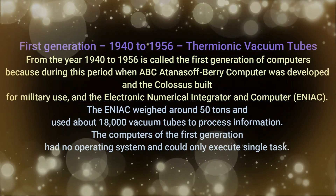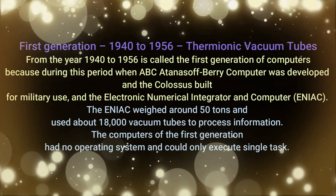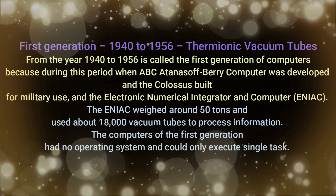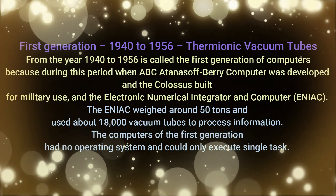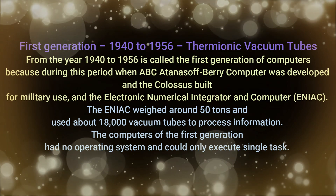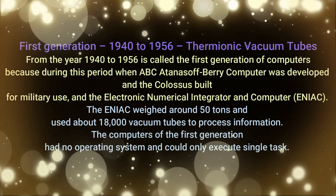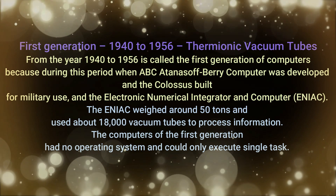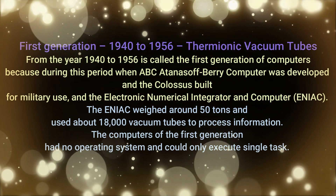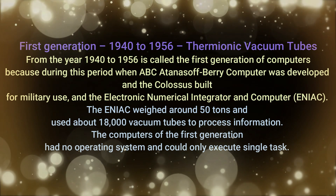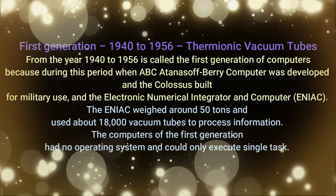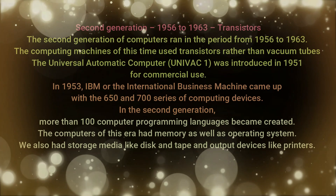First generation: From the year 1940 to 1956, this era is called the first generation of computers. During this period, the ABC — Atanasoff Berry Computer — was developed, the Colossus was built for military use, and ENIAC, the Electronic Numerical Integrator and Computer, was developed. The ENIAC weighed around 50 tons and used about 18,000 vacuum tubes to process information. Computers of this generation had no operating system and could only execute a single task.